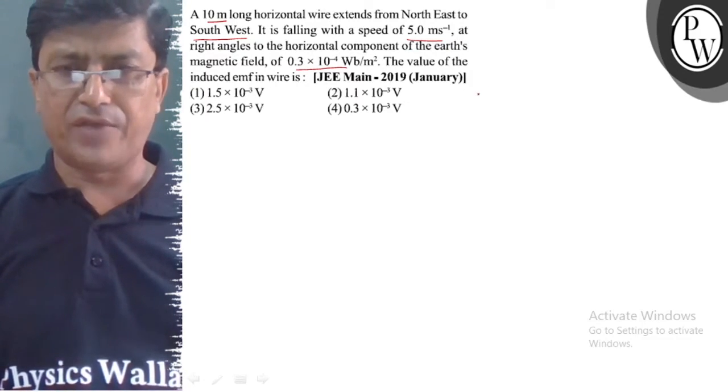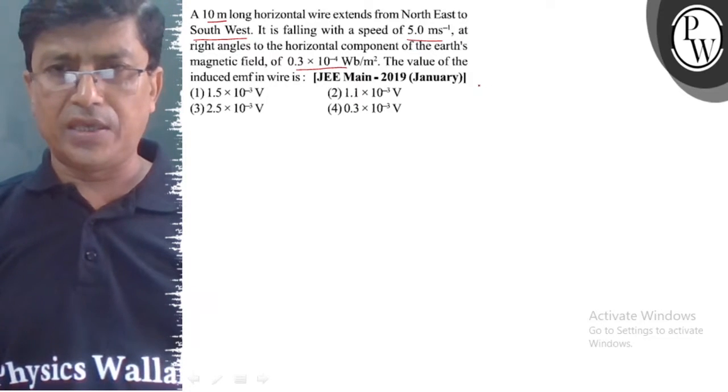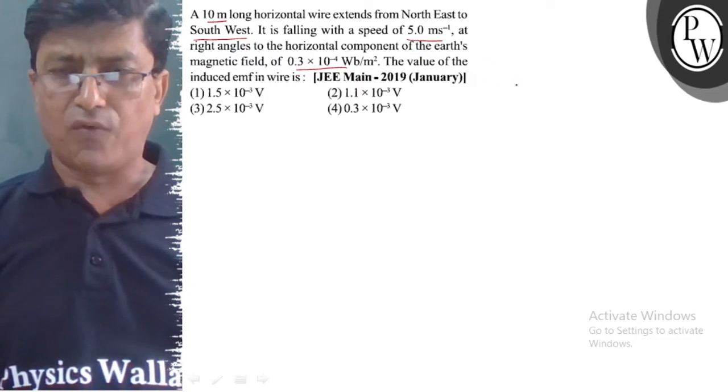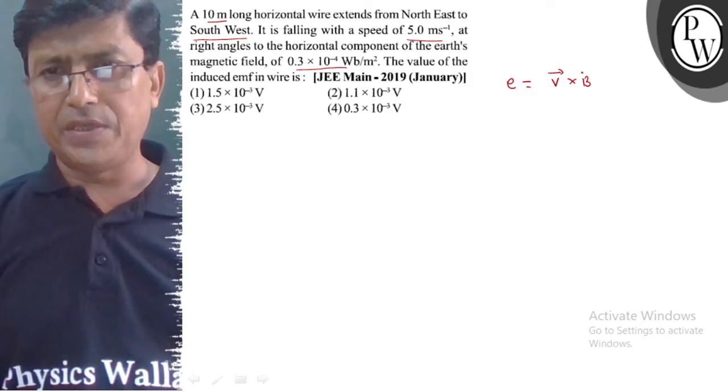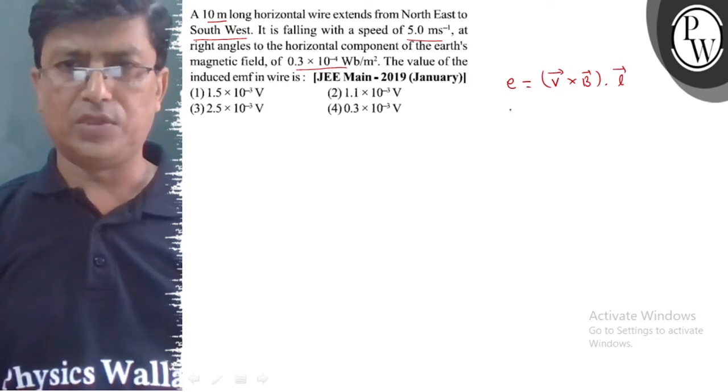The value of the induced EMF in the wire is... We know that the motional EMF is E = (V × B) · L. The value is equal to VBL sin 45°.